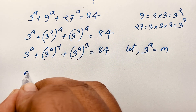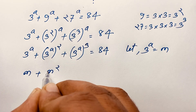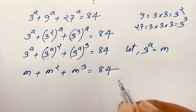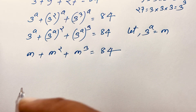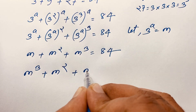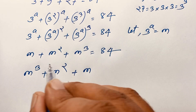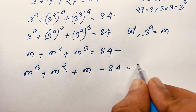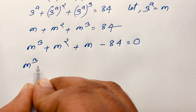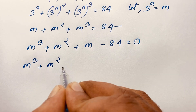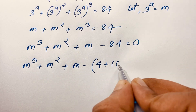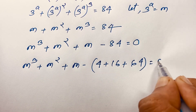Substituting, the expression becomes m plus m squared plus m cubed equals 84. Rearranging into a cubic equation: m³ + m² + m − 84 = 0. Notice that 84 = 4 + 16 + 64, which will guide our factoring.